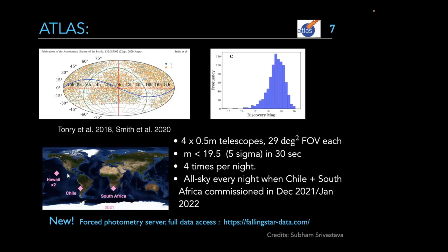To address this, ATLAS is setting up a telescope in Chile and South Africa to cover the full sky with four telescopes combined. The typical depth is about 19.5 to 20 magnitudes in 30 seconds, and it covers the full night sky four times per night — very rapid, and it has discovered many new candidates including supernovae and different object types.